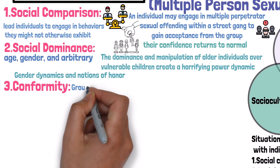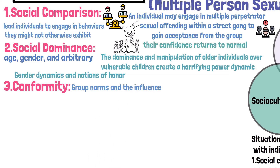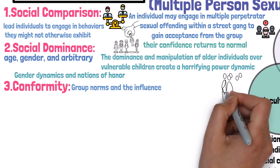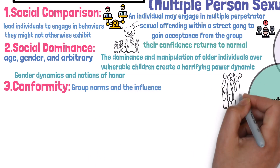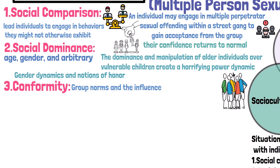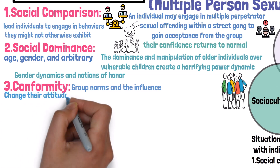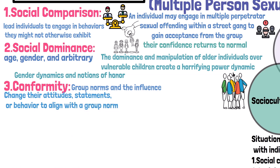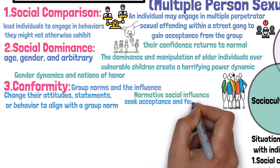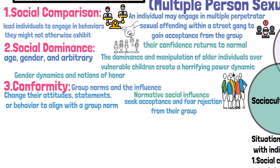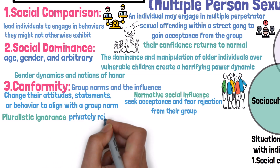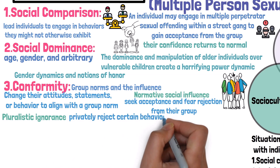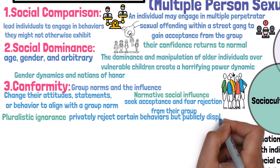In terms of conformity, the power of group norms and their influence on individuals' attitudes and behavior cannot be underestimated. Conformity occurs when individuals change their attitudes, statements, or behavior to align with a group norm. Normative social influence plays a role as individuals seek acceptance and fear rejection. Pluralistic ignorance can also be at play, where individuals privately reject certain behaviors but publicly display them due to the perceived group consensus.